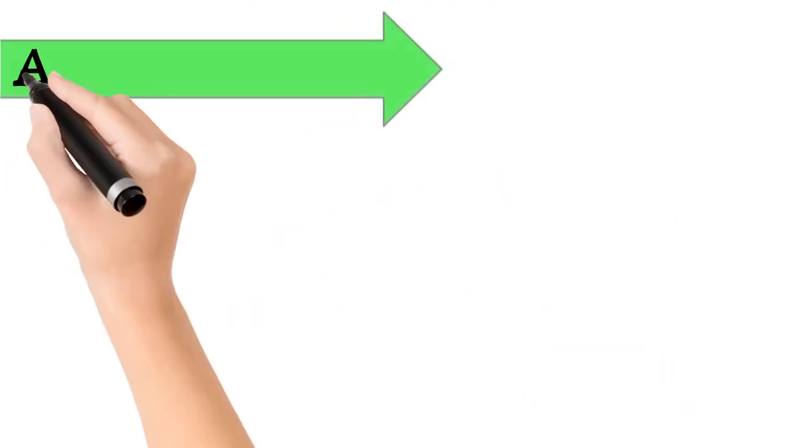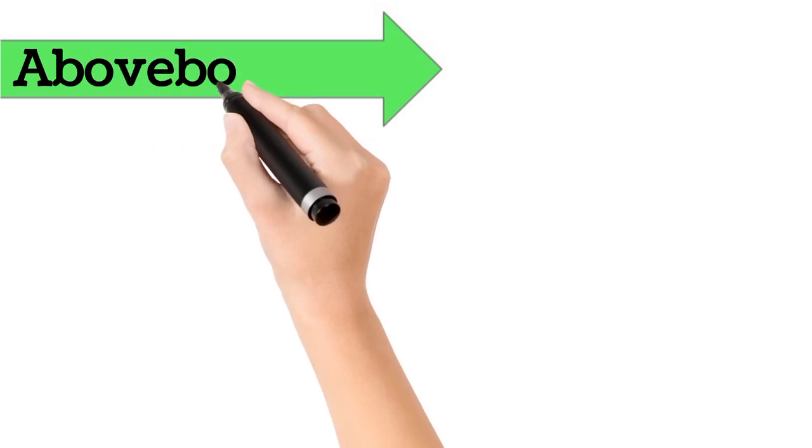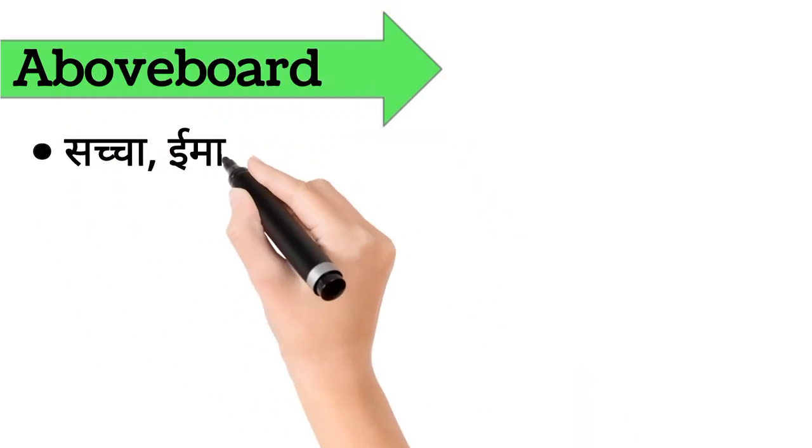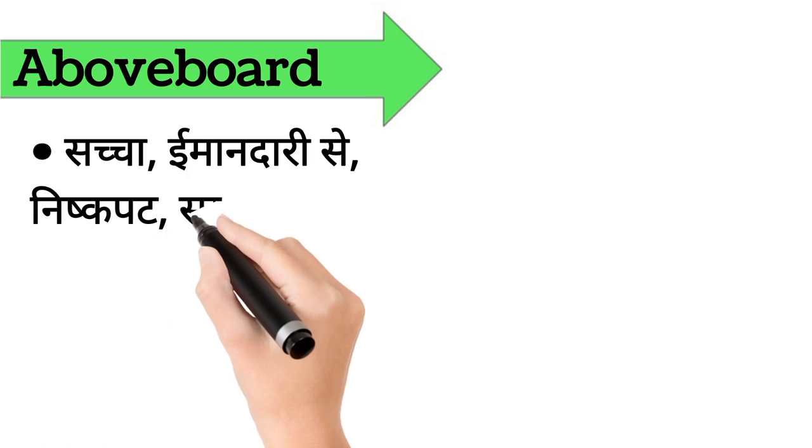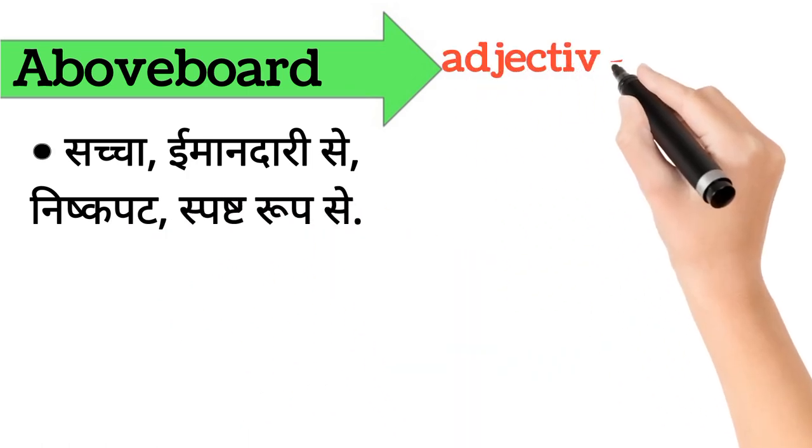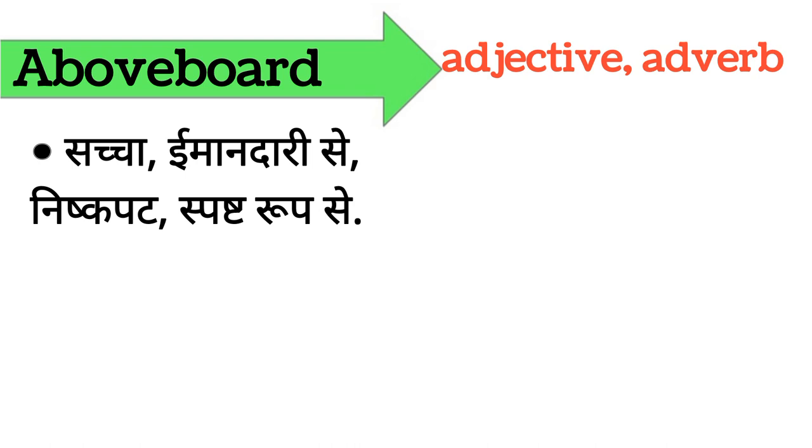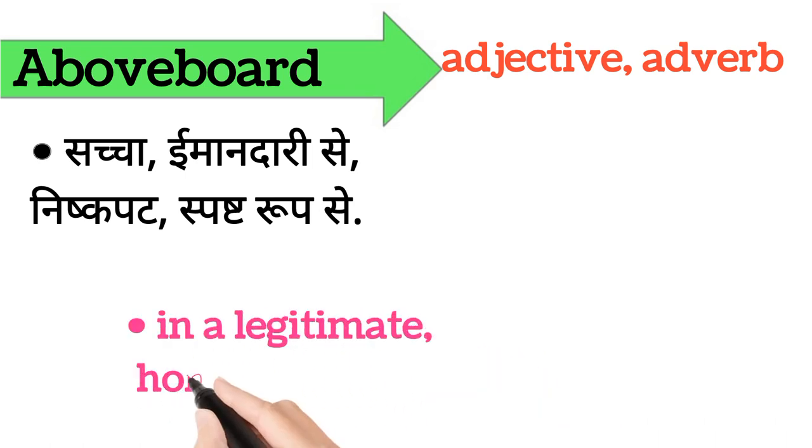Above board. Above board ka arth hai, sacha, imaandari se, nishkapat, spashtroop se. Above board word adjective, adverb form mein aata hai. It's also called, in a legitimate, honest, openly.